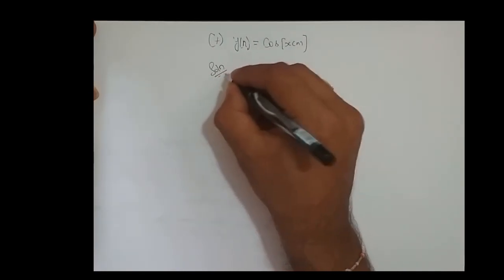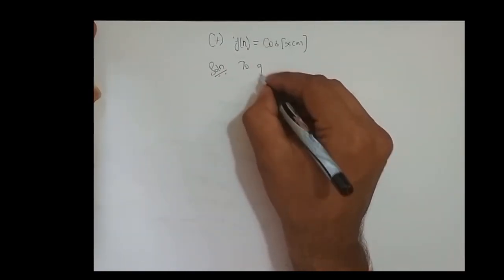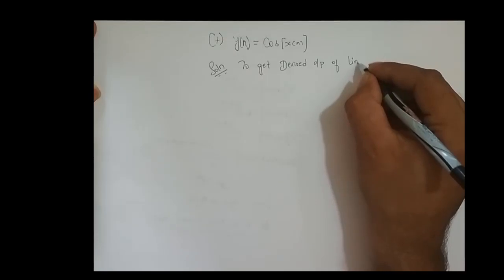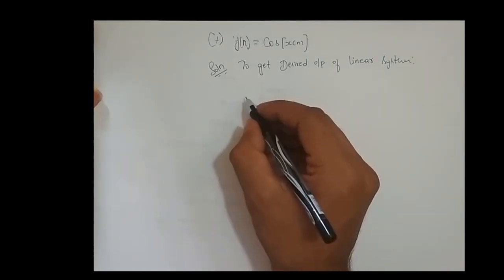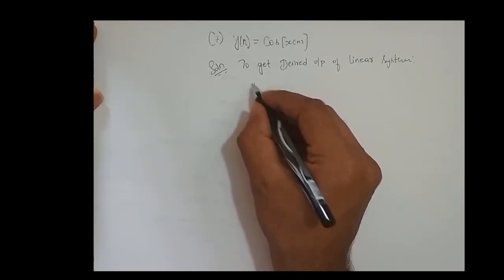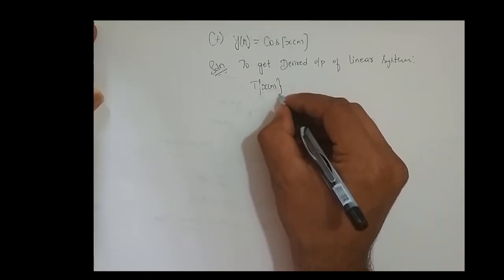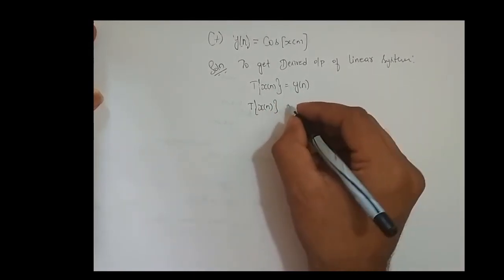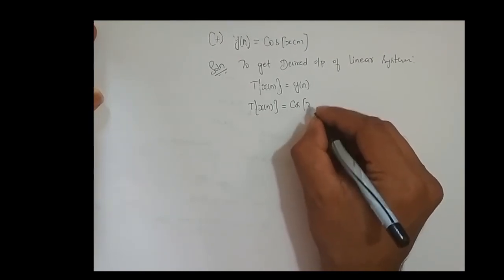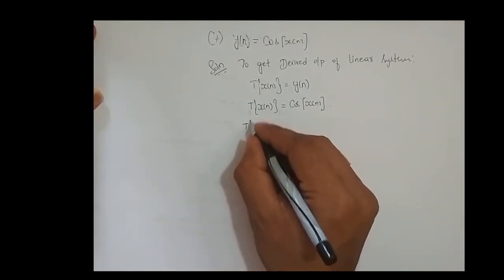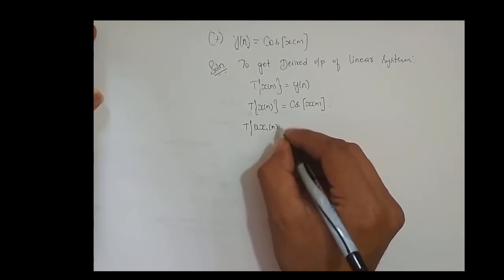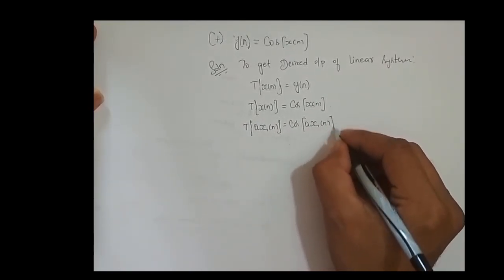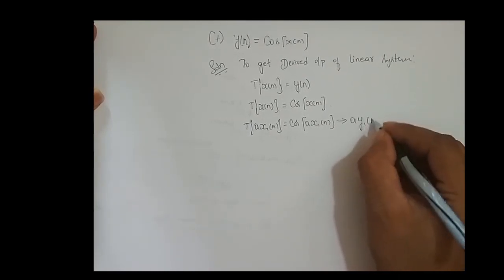Let us take up the solution. To get the desired output, the output of a linear system — as per the linearity property, transformation of x of n is equal to y of n. Transformation of x of n is equal to cos of x of n. Now if I give the scaled input a times x1 of n, the output is cos of a times x1 of n, and the scaled output is a times y1 of n.